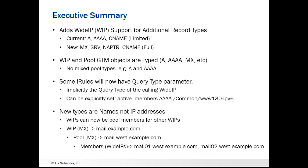Another interesting thing to note is that the new types of wide IPs can return names as a response to the query, not IP addresses. When you query for MX records, you actually receive the names back of the mail servers, not necessarily the IP address. They may be included in the additional information section, but the default is to respond back with the names.